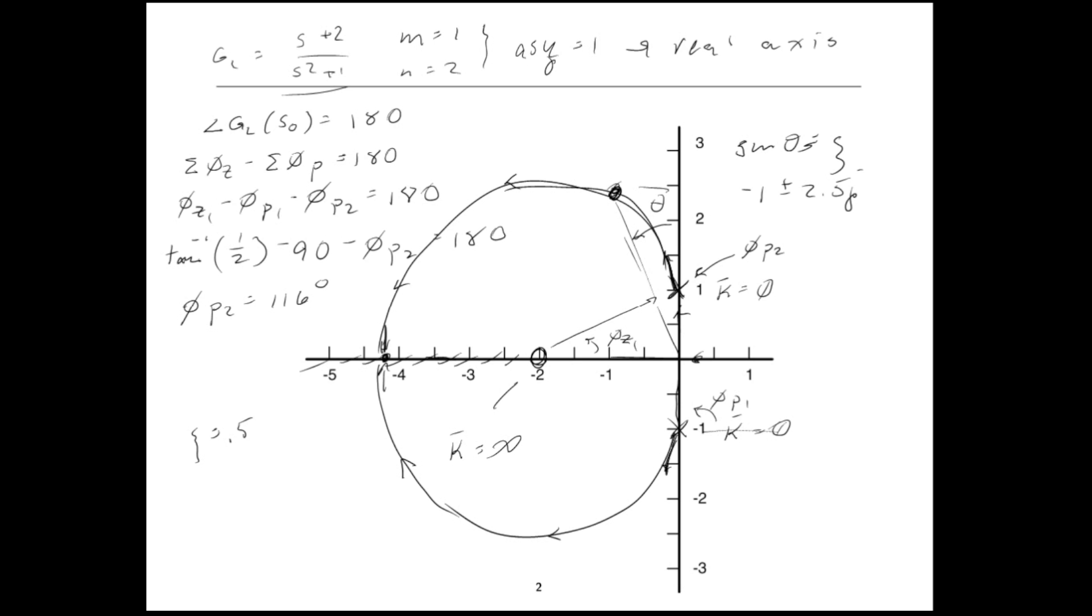Now all we have to do is figure out the value of K that puts the root locus there. So what I'm going to do is erase this because I want to keep that plot visual, and I'll just hog out a little bit of space like so, and we'll do our K calculation.